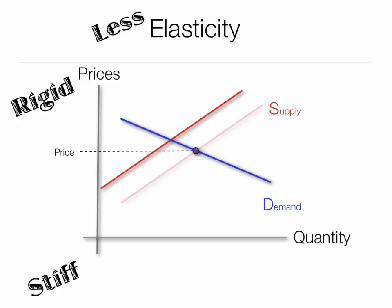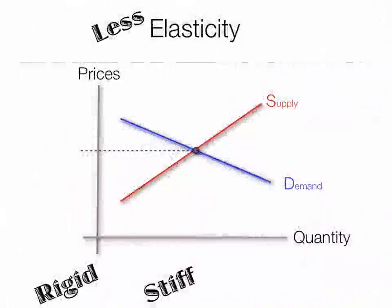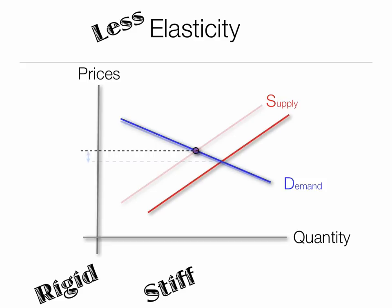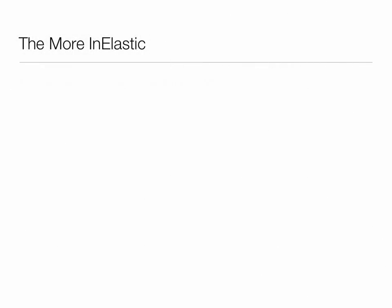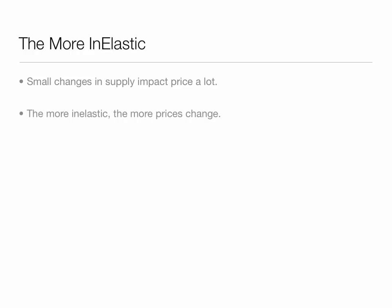Let's say that supply decreases. In a normal situation, the price would rise to that level — the blue dotted line. But if demand is inelastic, what we see is that prices rise a lot more. That means people are not able to substitute out and utilize other products. The same is true if supply increases — prices fall a lot more significantly. The more inelastic, small changes in supply impact price a lot.